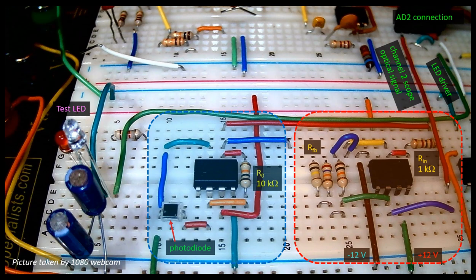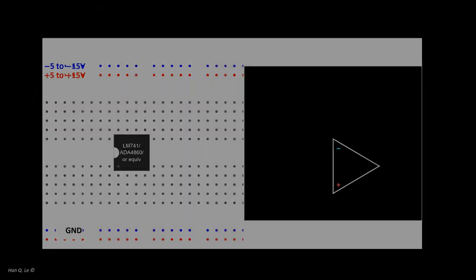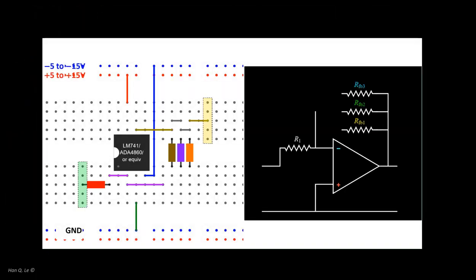Lastly, the third part, highlighted in green, is the connection of the AD2 to the circuits so that measurements can be made. The voltage amplifier can be wired in less than 10 steps.